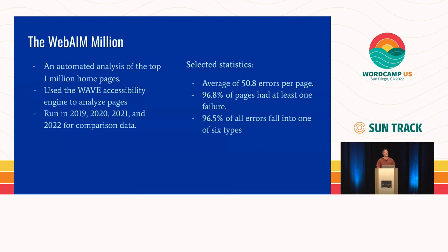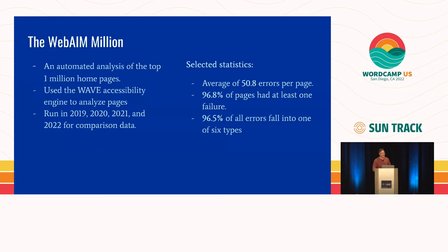A few key selected statistics: on average, these pages exhibited about 51 errors per page. 96.8% of those pages had at least one failure. And of these errors, 96.5% of every error they were able to detect with automation were one of these six types. That's only six different varieties of error accounting for that high a percentage.